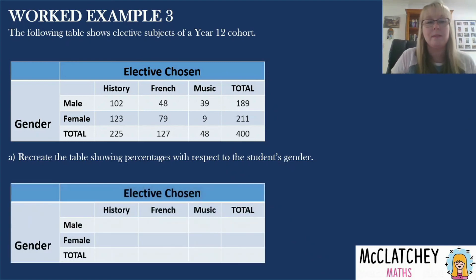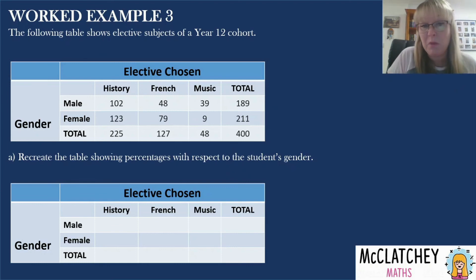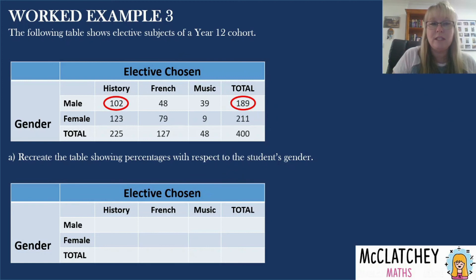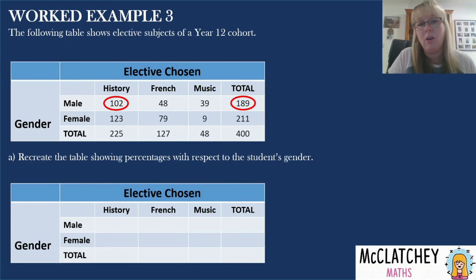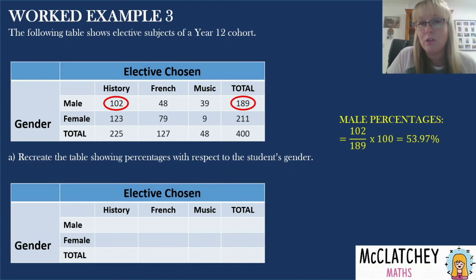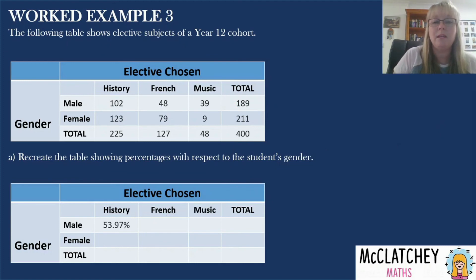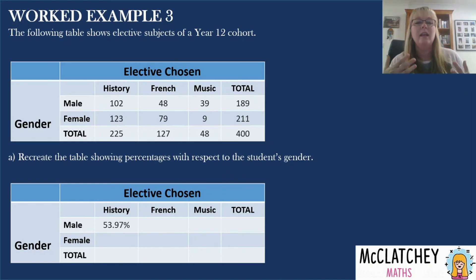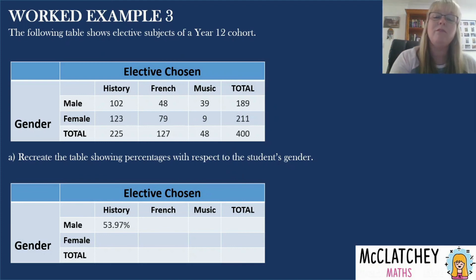We're going to set up a new table with all the same headings and blank spaces, mirroring the original but with percentages relative to gender totals. For history and male students: there are 102 males who chose history out of 189 males altogether. So 102 over 189 times 100 gives 53% — meaning 53% of boys chose history as their elective. If instead I'd been asked to calculate with respect to the elective chosen, I'd divide 102 by 225, which is the total number of students who chose history. Reading the question carefully is crucial.